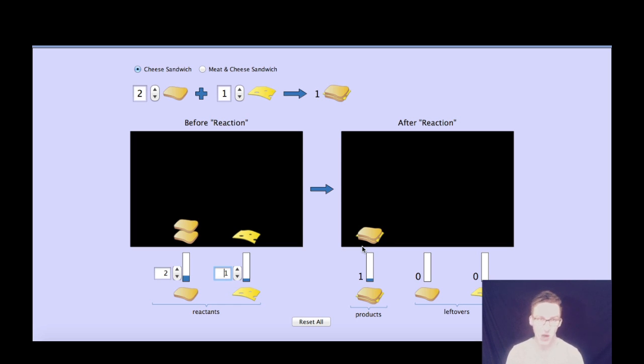But let's say I wanted to double my number of sandwiches. I wanted to make two sandwiches. Well, in order to make two sandwiches, I need to have four slices of bread and two slices of cheese. Or let's say I wanted to triple it, really hungry, three cheese sandwiches. I want now six slices of bread and three slices of cheese in order to make three sandwiches.